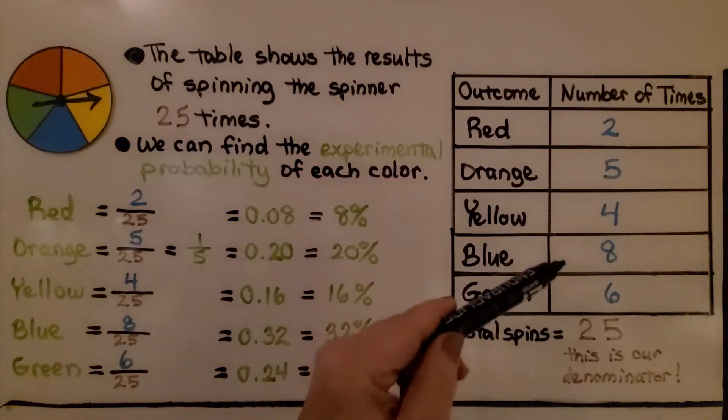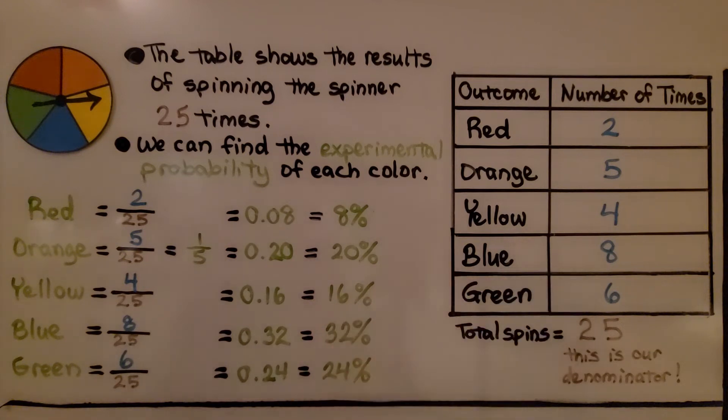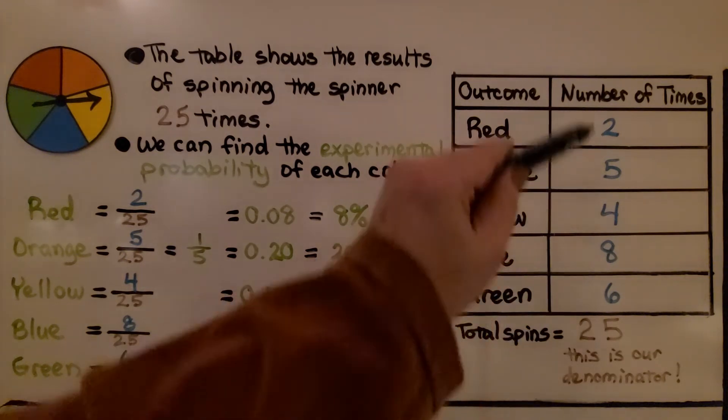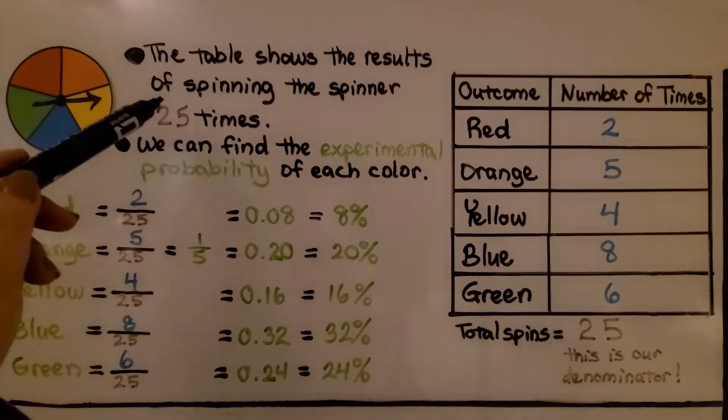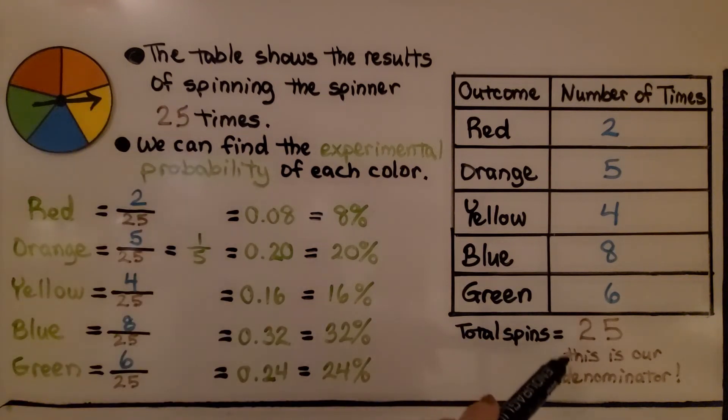So red was two times, orange is five, yellow is four, blue is eight, and green is six. We total all these spins, it's twenty-five times. This is going to be our denominator, the twenty-five.